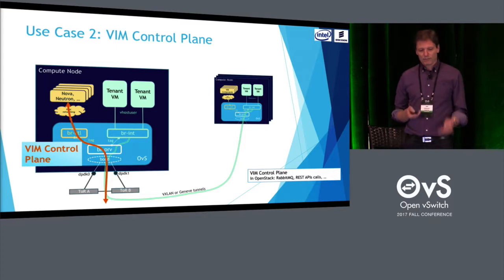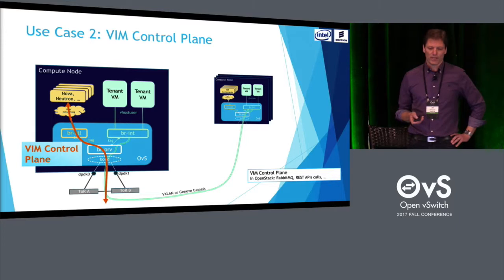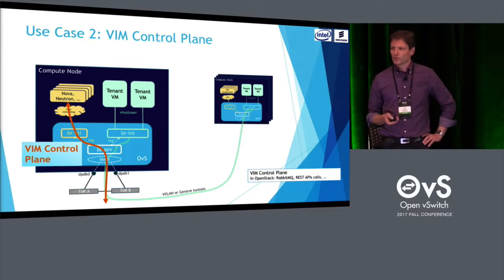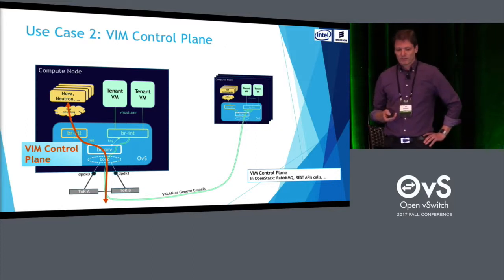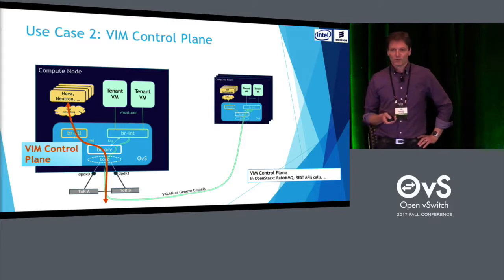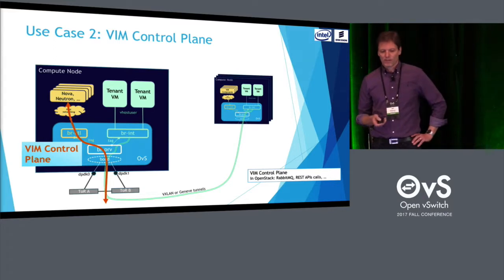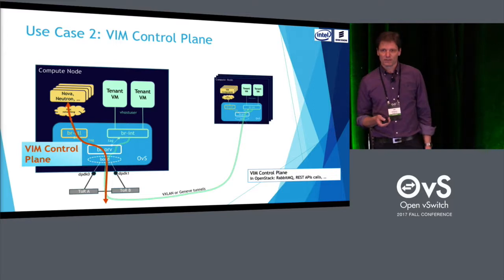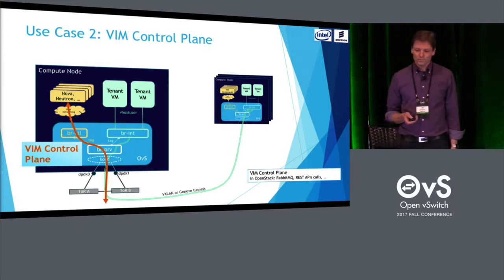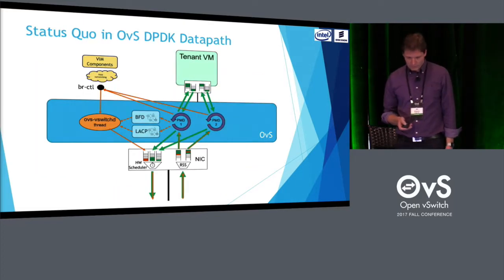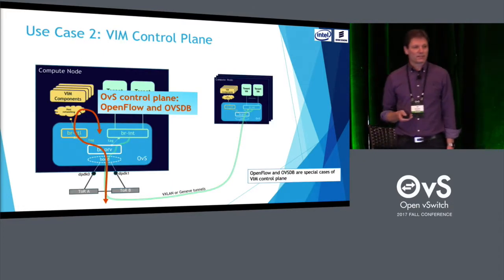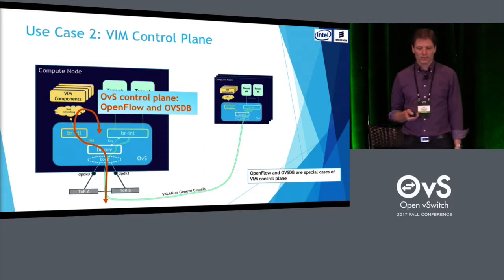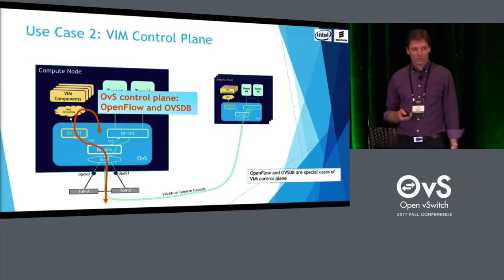The second use case is the VIM control plane — typically OpenStack — with RabbitMQ, MessageBus, and REST API calls over HTTP going between OpenStack components on different compute servers. Since they share the same physical network, it needs to be protected. This control plane uses the host networking stack interfacing the provider bridge in OVS through a dedicated control bridge connected via a tagged patch port. The OpenFlow and OVSDB control channels between an SDN controller and the OVS instance on all computes has the same problem and needs to be protected.